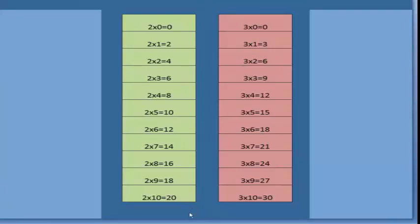So we're going to just go down the 2s. 2 times 0 is 0, 2 times 1 is 2, 2 times 2 is 4, 2 times 3 is 6, 2 times 4 is 8, 2 times 5 is 10, 2 times 6 is 12, 2 times 7 is 14, 2 times 8 is 16, 2 times 9 is 18, 2 times 10 is 20. And we're going to go ahead and do that 3 times.